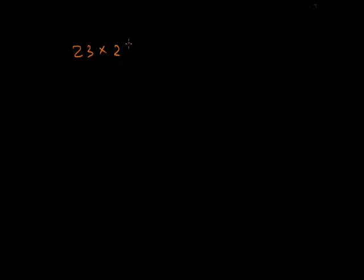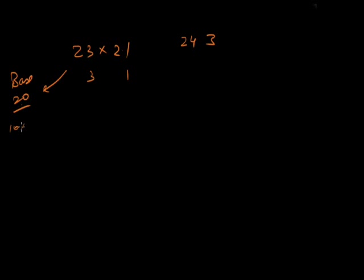Let me give an easier example: 23 times 21. The base is 20 (which is 10 times 2). 23 is 3 more than 20 and 21 is 1 more than 20. 3 times 1 is 3. Then 23 plus 1 (or 21 plus 3) is 24. Since base is 20, we multiply 24 by 2 to get 48. So 23 times 21 equals 483.